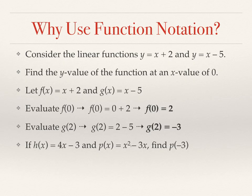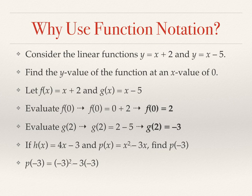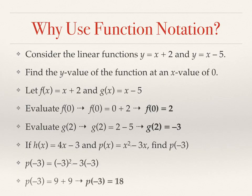The p function, right? The second one that was given. So p of negative 3 equals negative 3 squared minus 3 times negative 3. Now we're going to apply order of operations and simplify. p of negative 3 equals 9 plus 9.